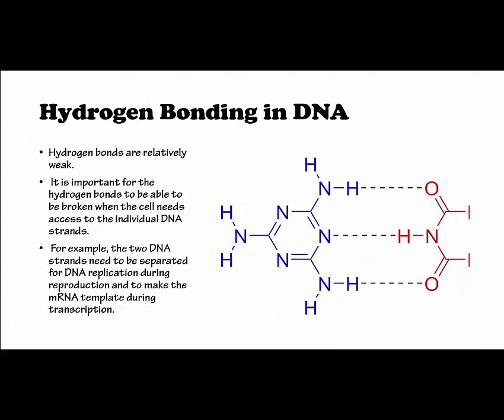The base pairs are held together with hydrogen bonds. Hydrogen bonds are relatively weak, and it is important for them to be able to be broken when the cell needs to access the individual DNA strands. For example, the two DNA strands need to be separated for DNA replication during reproduction and to make the mRNA template during transcription.